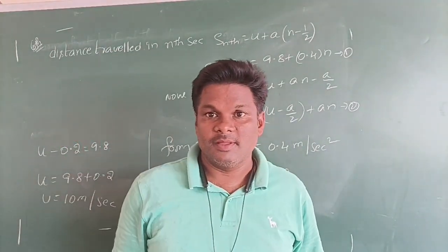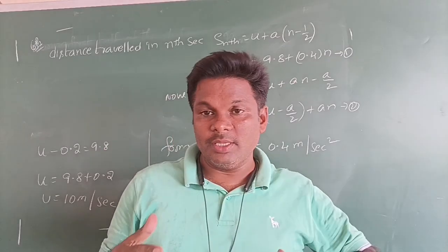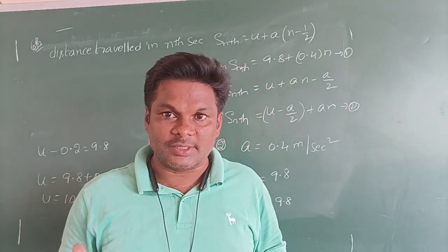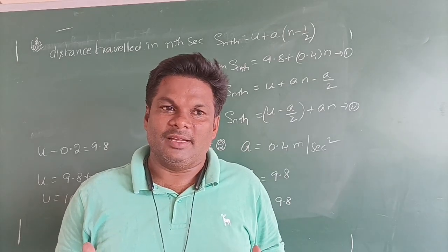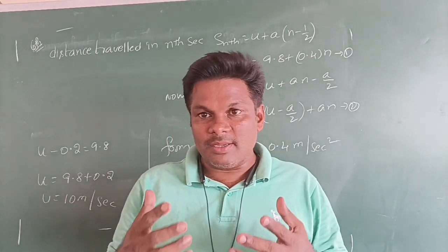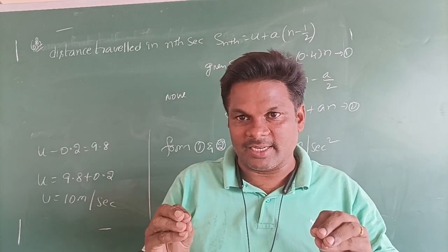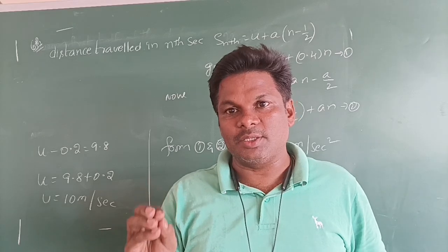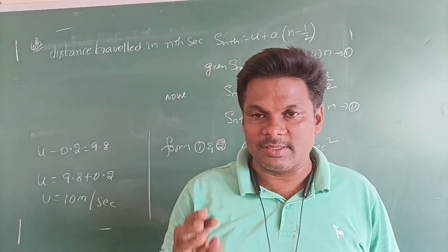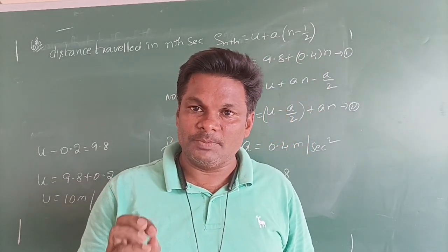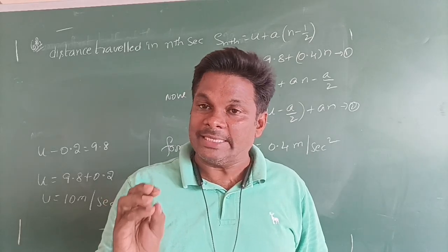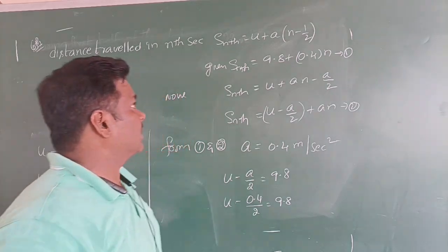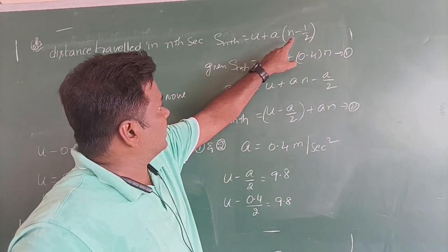In our next sum, that is the sixth sum, a body is in uniform motion and it traverses a distance Sₙ — that means in the nth second, not n seconds. The equation is: Sₙ = U + A(n − ½). This is the equation for distance covered by an object in the nth second of its motion.